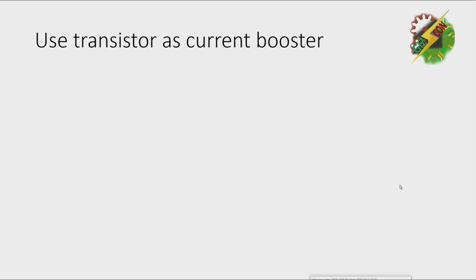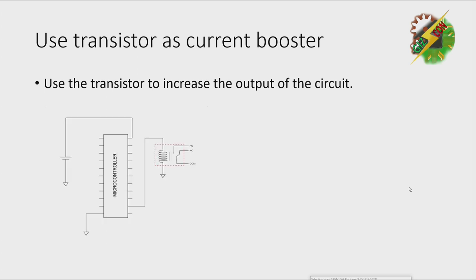Now, this is our first solution: we can use a transistor as our current booster. A current booster uses a transistor to increase the output current of the circuit. Let's use our circuit from earlier. We have a 5-volt supply and a relay with a 5-volt coil.